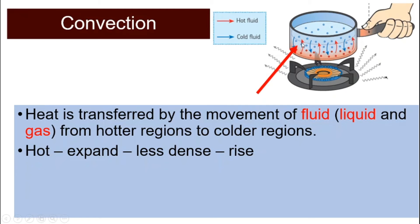So this hot fluid at the bottom of the pot receives heat energy from the pot and they start to expand. When they expand, they become less dense and hence they will rise to the top of the water. And then the cold fluid, they are more dense compared to the hot ones and hence they will move downwards.